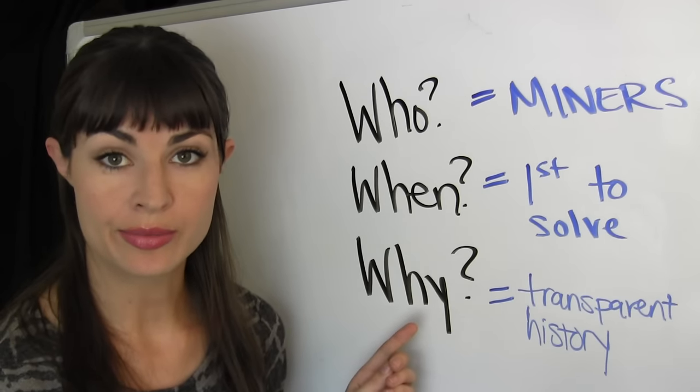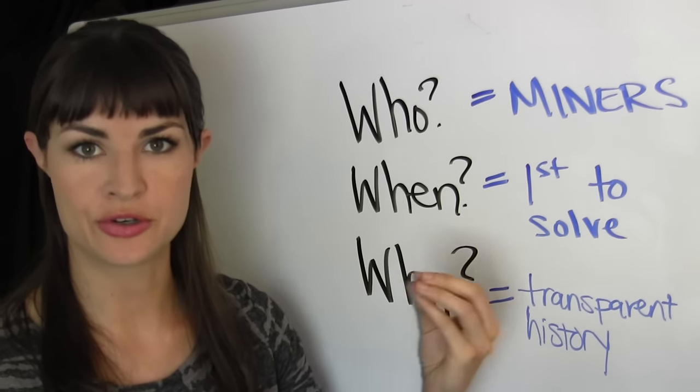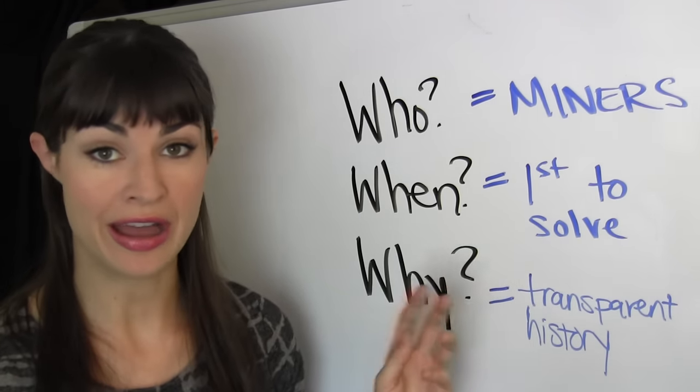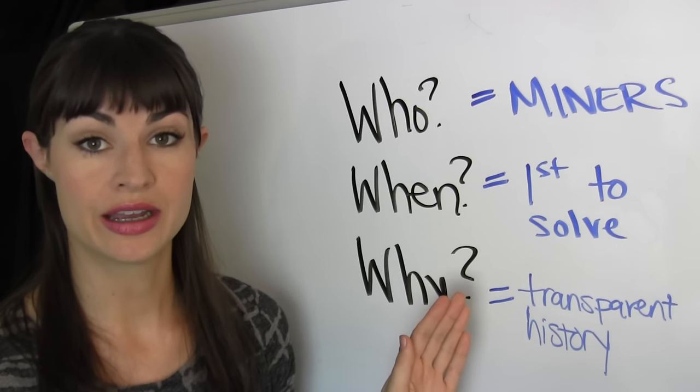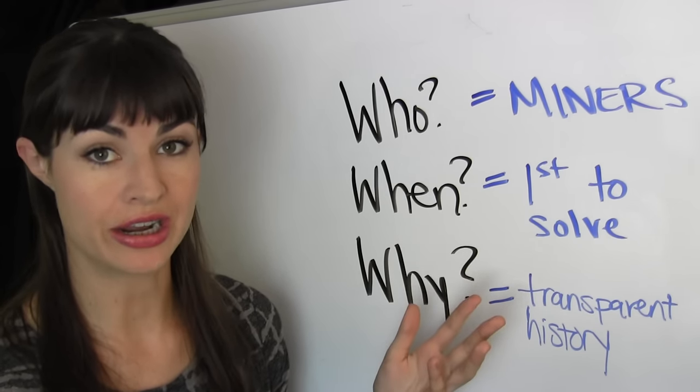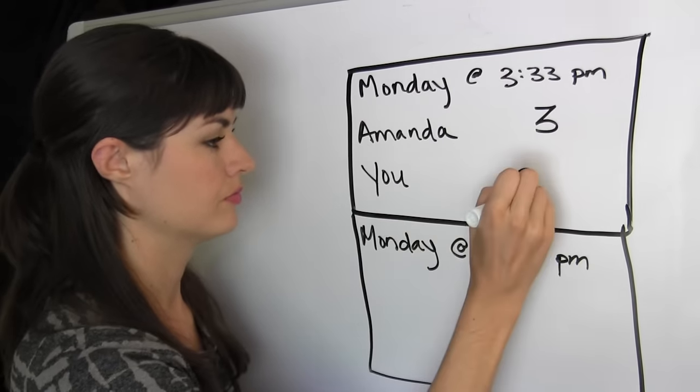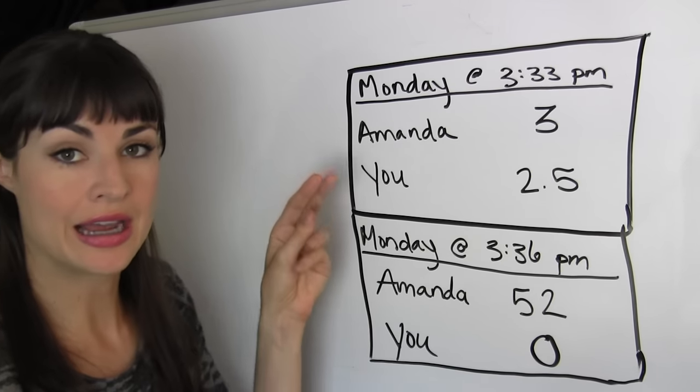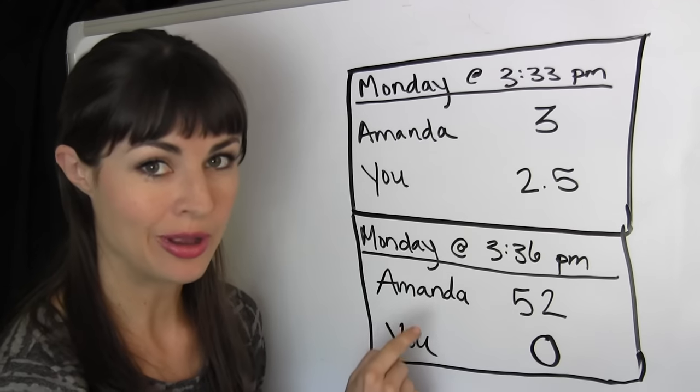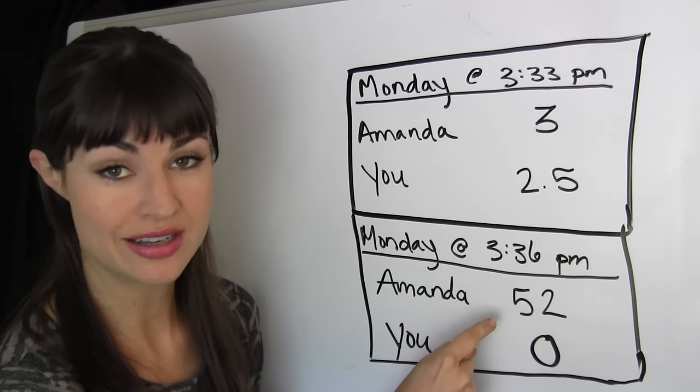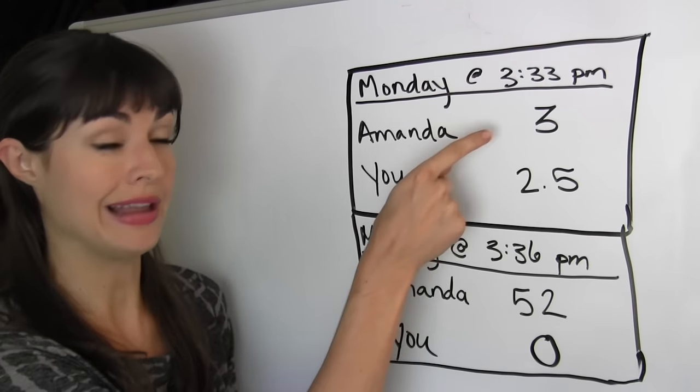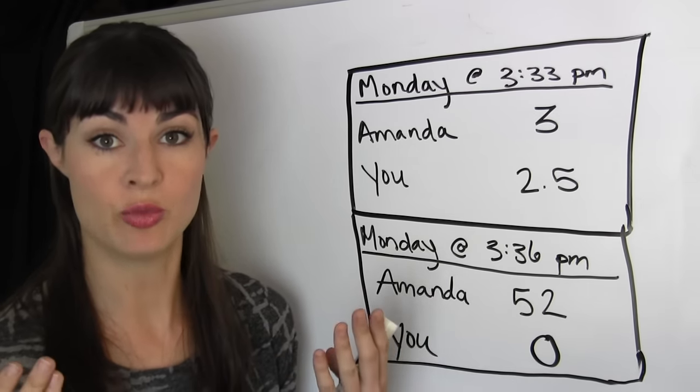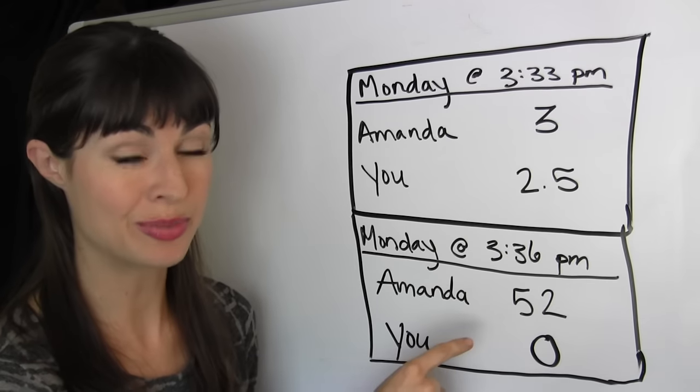And the reason why we are able to trust these entries into the ledger as being accurate is that the entire history of every unit of eMoney is public in the blockchain. Just as an example, imagine that this is a zoomed-in snapshot of two consecutive blocks. If this block shows me having more units of eMoney than I did in the last block, there has to be a transaction, a record of someone sending me that eMoney for this block to be valid.